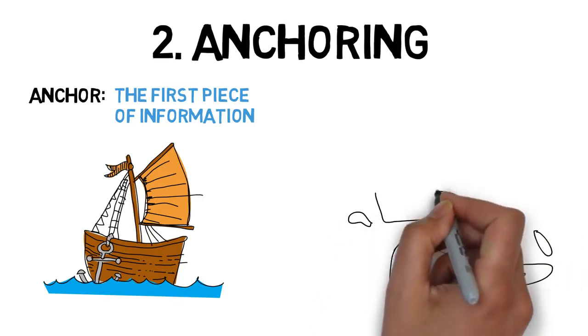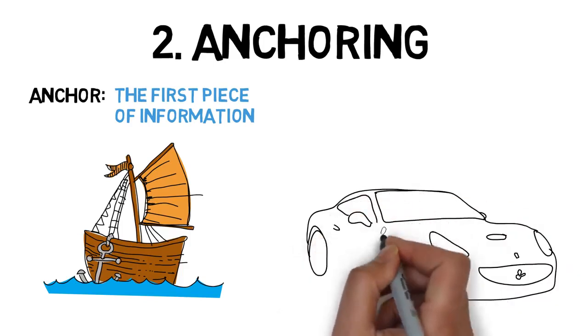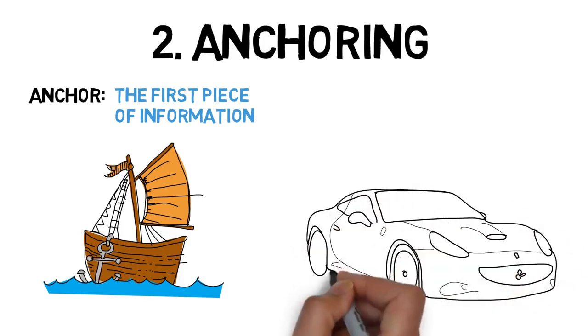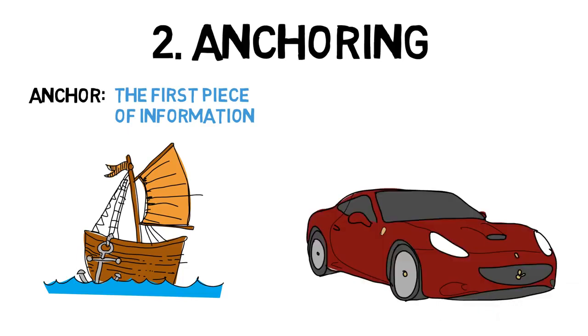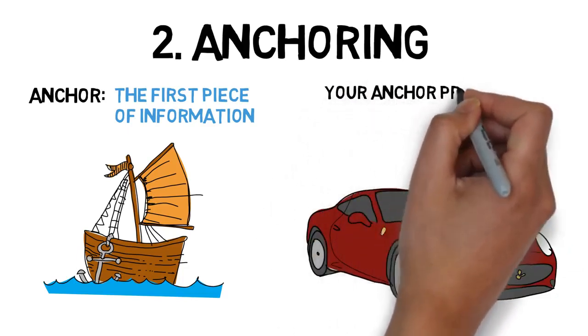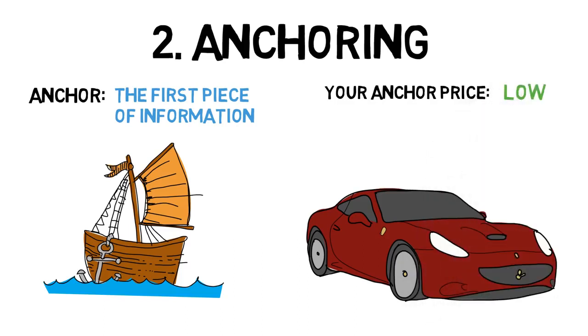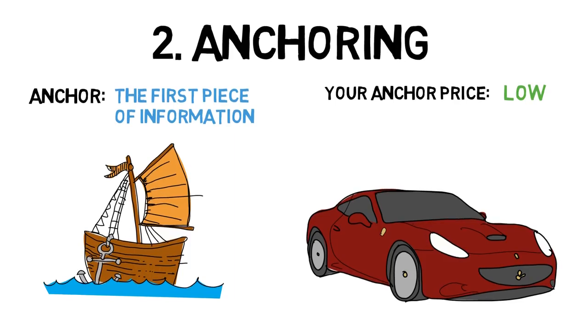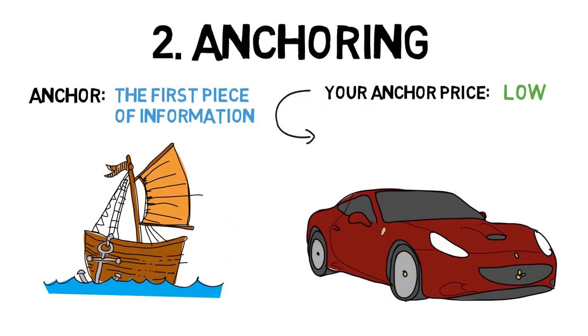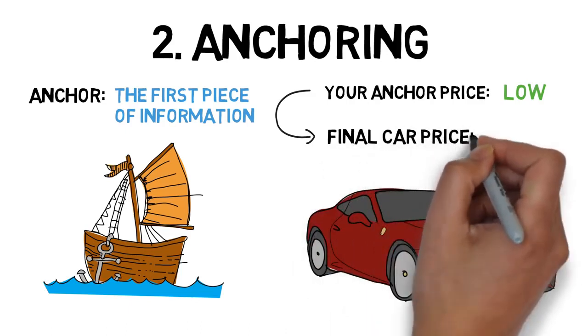Say that you're negotiating a deal with a car dealer. You really want the car, but it looks expensive. Thus, when you first speak with a car dealer, you quickly provide a very low asking price. After all, you want to buy the car cheaply. This initially low proposition for the price of the car anchors the negotiation to that value. The dealer probably won't agree to your suggested price, but that doesn't matter because the anchor is already set.